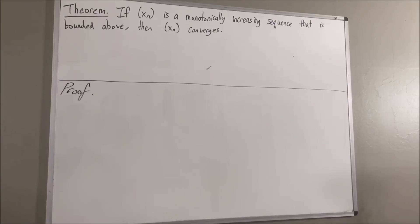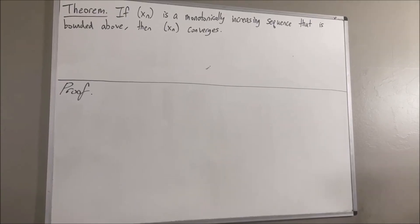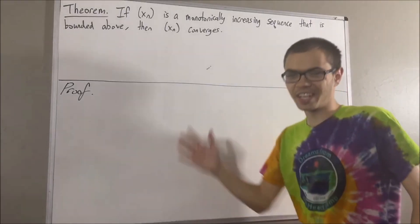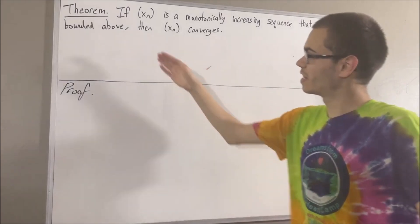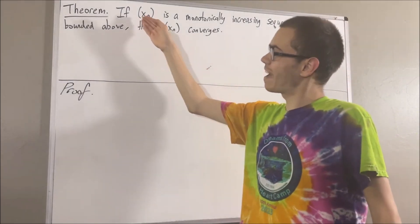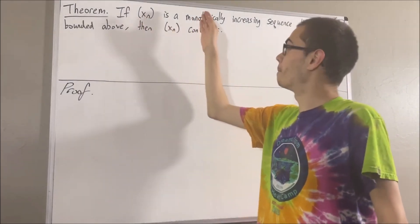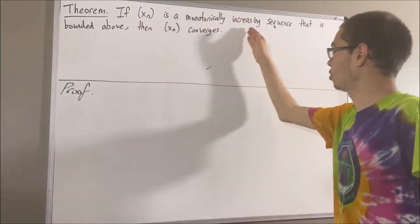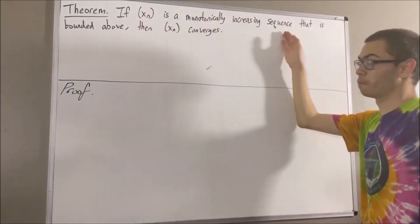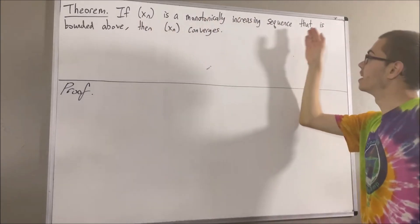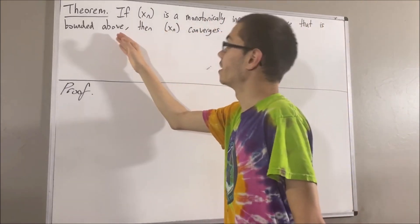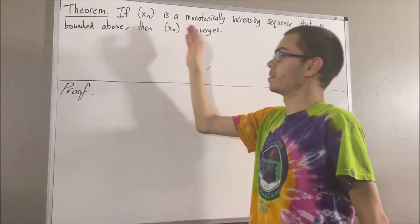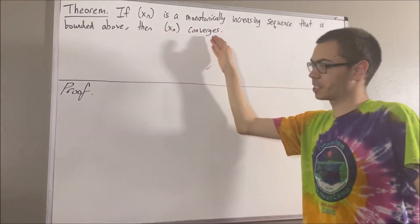Hello! In this video, we are going to prove the following theorem: if Xn is a monotonically increasing sequence of real numbers that is bounded above, then the sequence converges.